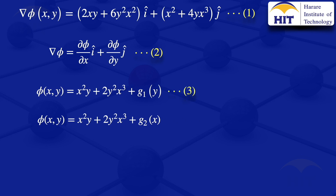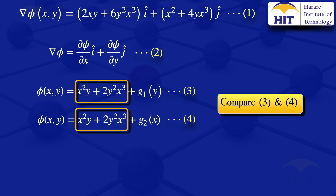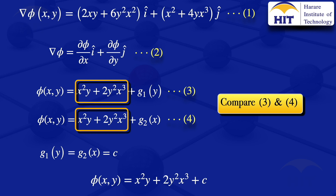I label those results equation 3 and equation 4, then compare them. Since both equal φ(x, y) on the left-hand side, the common terms cancel, and we are left with g₁(y) = g₂(x). Since g₁ is a function of y only and g₂ is a function of x only, they can only be equal if they are both a constant c. Substituting that into equation 3, we get φ(x, y) = x²y + 2y²x³ + c, which is the function φ we were looking for.